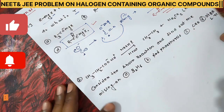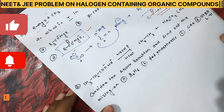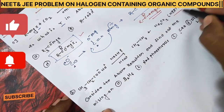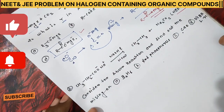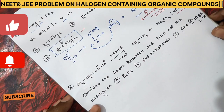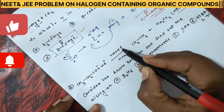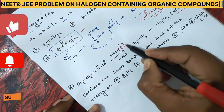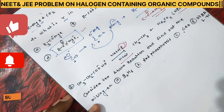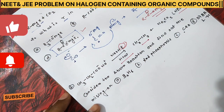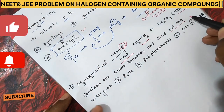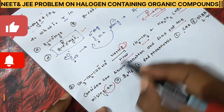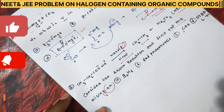Now let's see the next reaction. This question is from NEET 2021 exam. The reaction given is: (CH₃COO)⁻Na⁺ reacts with NaOH, and we need to find out what happens with NaOH — it gives CH₄ plus Na₂CO₃. Consider this reaction and find out the missing reagent.